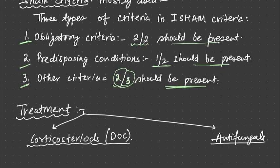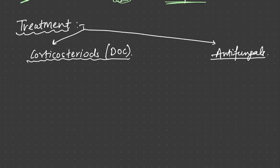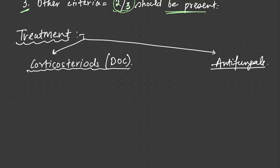What is the treatment? The treatment is corticosteroids and antifungals. Corticosteroids are the drug of choice. They have to be given in a patient of ABPA along with antifungals.